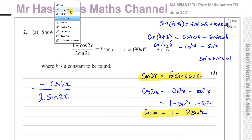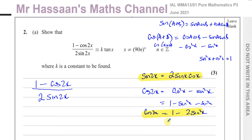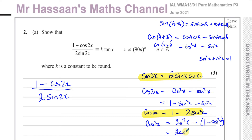A third version can be derived similarly. Taking cosine 2x = cosine squared x − sine squared x and replacing sine squared x with 1 − cosine squared x gives cosine 2x = 2 cosine squared x − 1. So you should know that cosine 2x equals either 1 − 2 sine squared x or 2 cosine squared x − 1. We need to use these identities to end up with tan x.